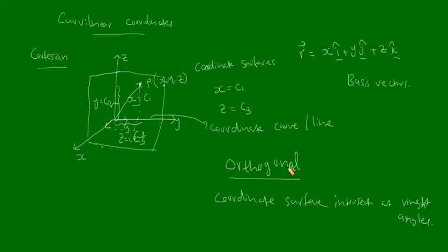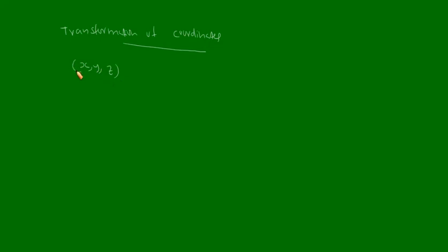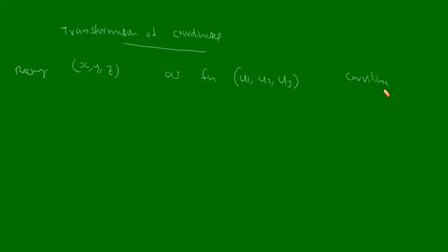Now I am moving on to the curvilinear coordinate system. Let us look at the transformation of coordinates. Suppose the Cartesian or rectangular coordinates of a point are x, y, z. These rectangular coordinates of any point in space are expressed as functions of u1, u2, u3 — which are the curvilinear coordinates.